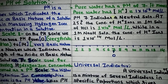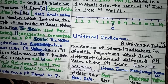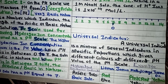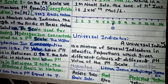Next topic is the universal indicator. Definition: a universal indicator is a mixture of several indicators in specific proportions which gives different colors at different pH values on the pH scale. It is called the universal indicator. Different indicators combined give a range of color changes across different pH values.